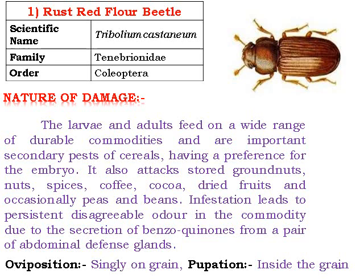Nature of damage: the larvae and adults feed on a wide range of stored commodities and are important secondary pests of cereals, having a preference for the embryo. They attack stored grain, stored products, nuts, spices, coffee, cocoa, bread, and occasionally peas and beans. Infestation leads to a persistent and disagreeable odour in the commodity, due to secretions from benzoquinones produced by abdominal defensive glands.